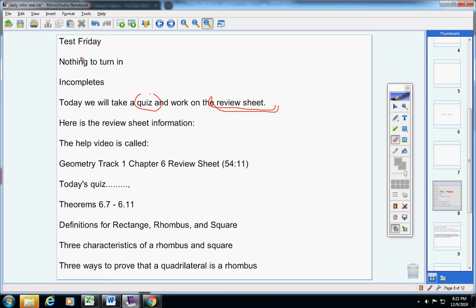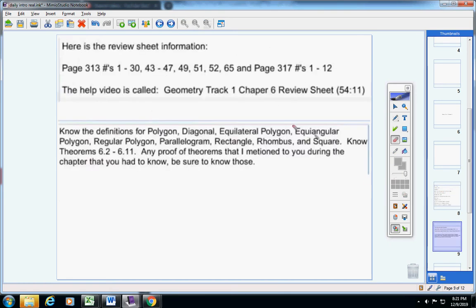So first of all, Macy, here's the review sheet information. Please pause the video and copy this down. I'm going to move on, so you'll want to pause the video. Here's the actual review sheet that's worth five bonus points, and here's the help video right here. Here's all the fill-in-the-blank information, plus any proof of theorems that I mentioned to you during Chapter 6 that you had to know. Be sure and know those now, Macy.